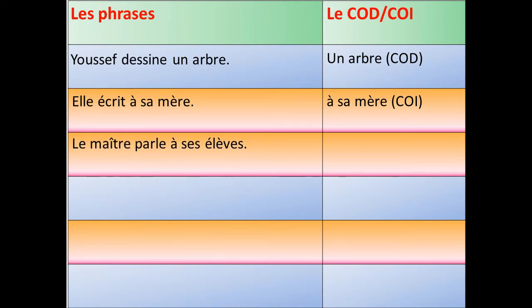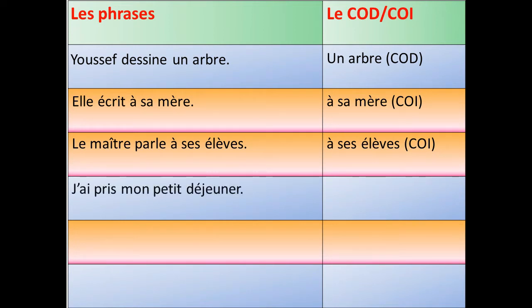Dans la troisième phrase : le maître parle à ses élèves. Le maître parle à qui ? Le maître parle à ses élèves. Donc, « à ses élèves », c'est le complément d'objet indirect.